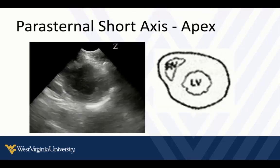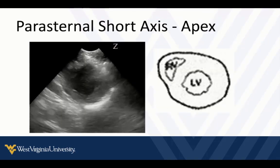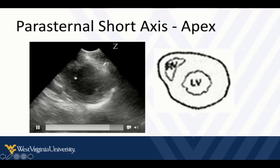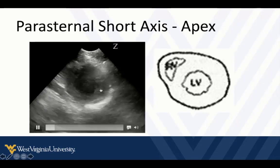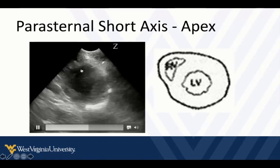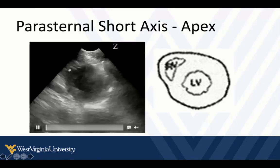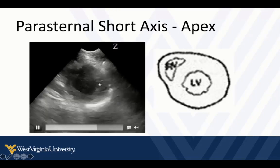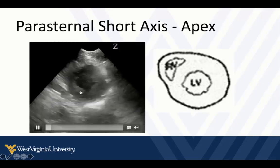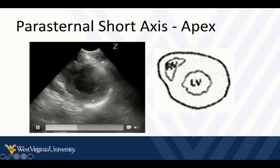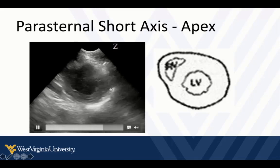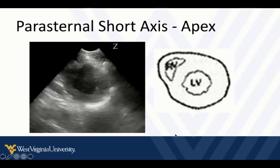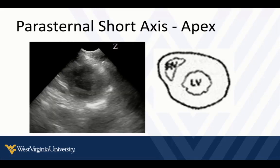In some patients we can slide out even further to get towards the apex, where we're past the papillary muscles and the right ventricle has pretty much gone out of view. There's just a little corner of it left, and we see a nice cross-section of the left ventricular apex. Those are the different slices we can get through the parasternal short axis.